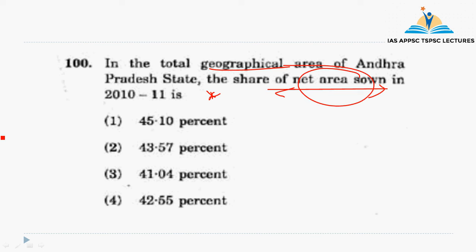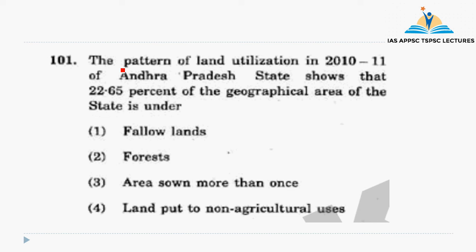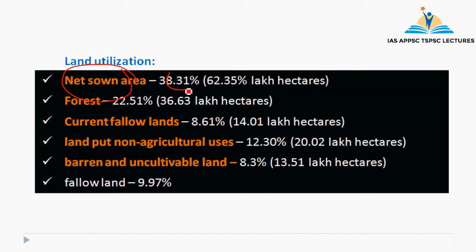In 2011-2012, we have a question about the net area in 2011-2012. This is a key area in the revision. The next question is the land utilization pattern. We have a good question about the trends, but we have to reverse the trends.